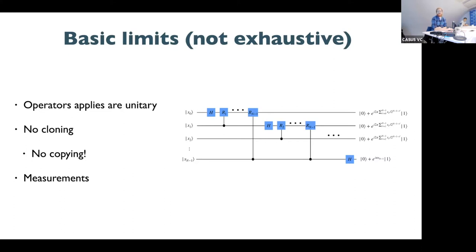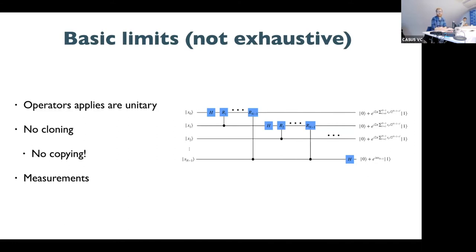The other fundamental limitation is that the nature of measurement is destructive. If I measure the wave function after performing some operations, I completely lose access to it and there's no way to recover it. A pure measurement of the wave function means you put in a lot of work into preparing it, performing some operations on it, and then you basically use it once. You then have to repeat that in order to get enough statistics on the measurement to get the answer. These are the fundamental barriers we need to work within to make efficient quantum algorithms.